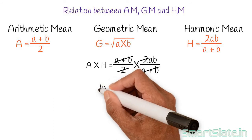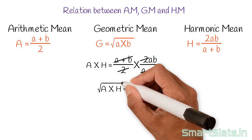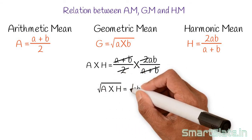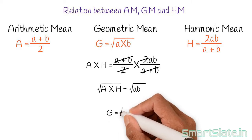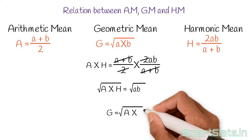Find the square root of these numbers. We get √(a × h) = √(a × b). Now, √(a × b) is nothing but the geometric mean. Hence, geometric mean g = √(a × h).